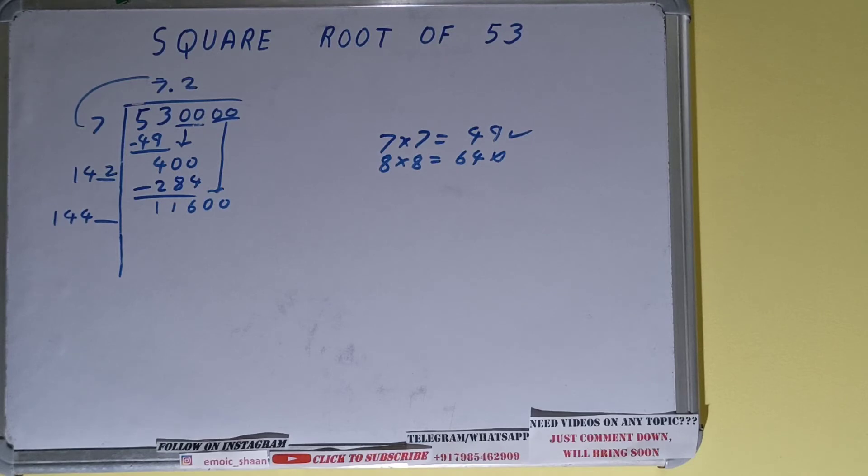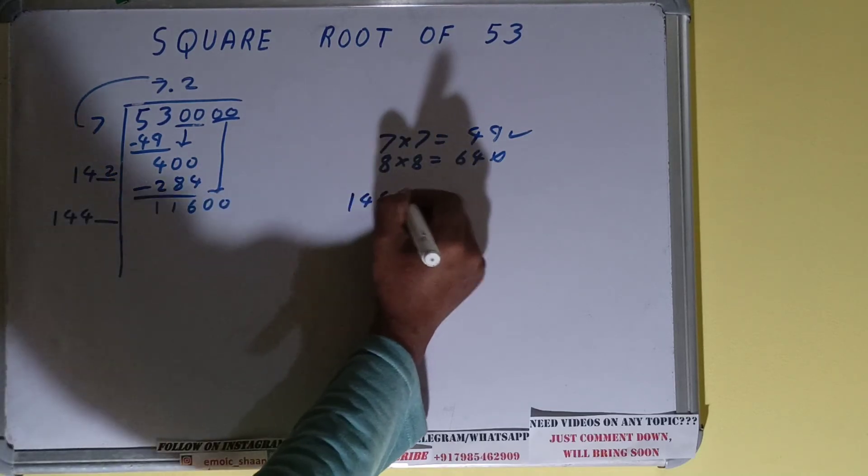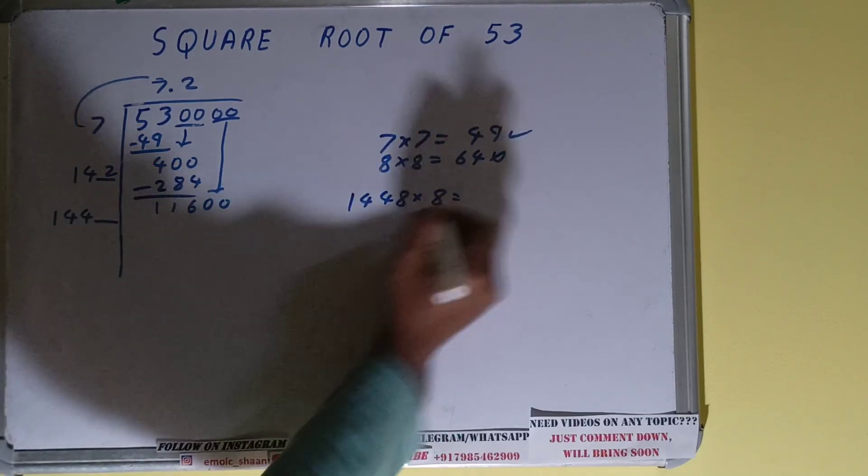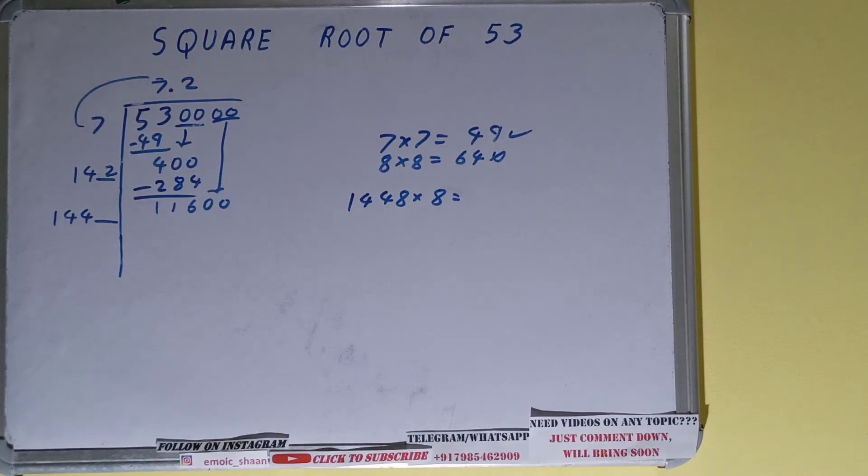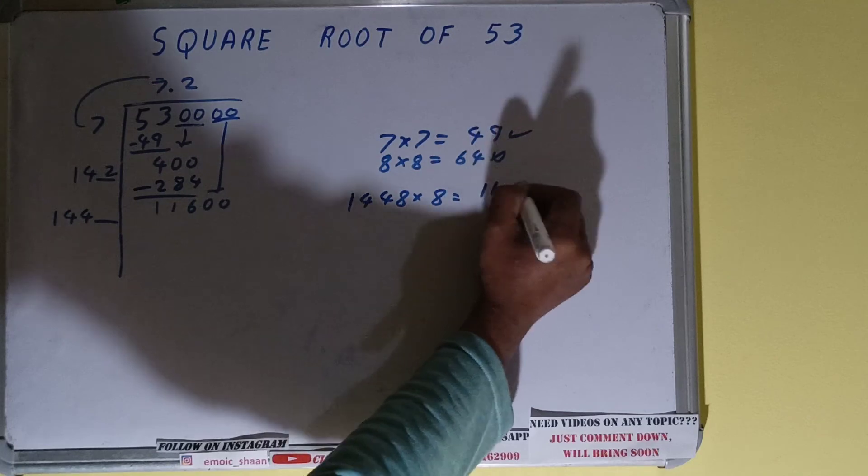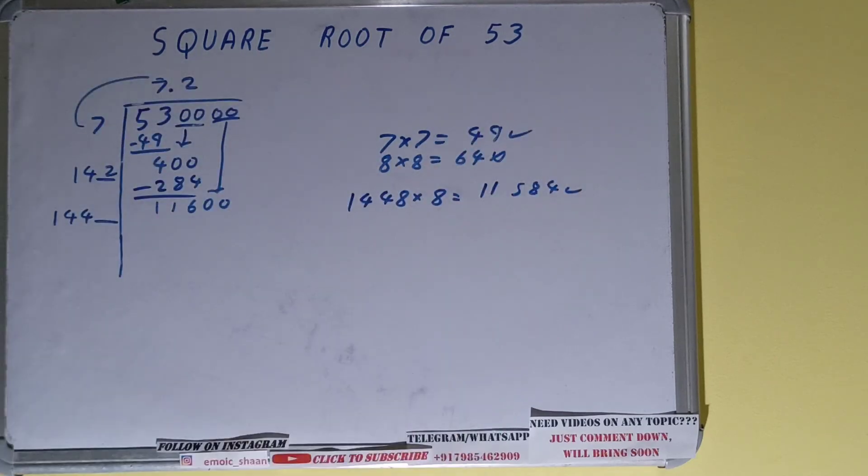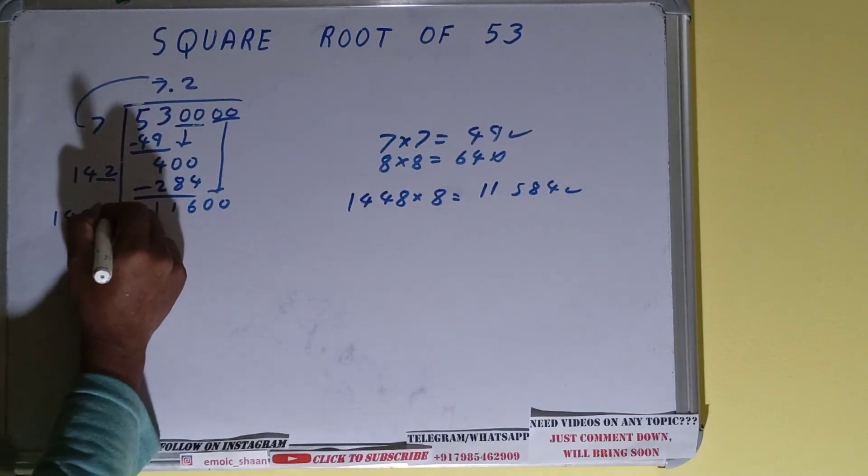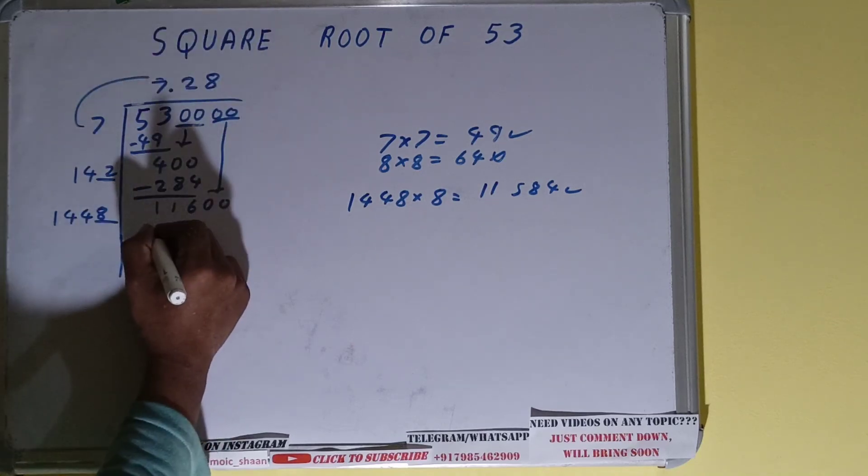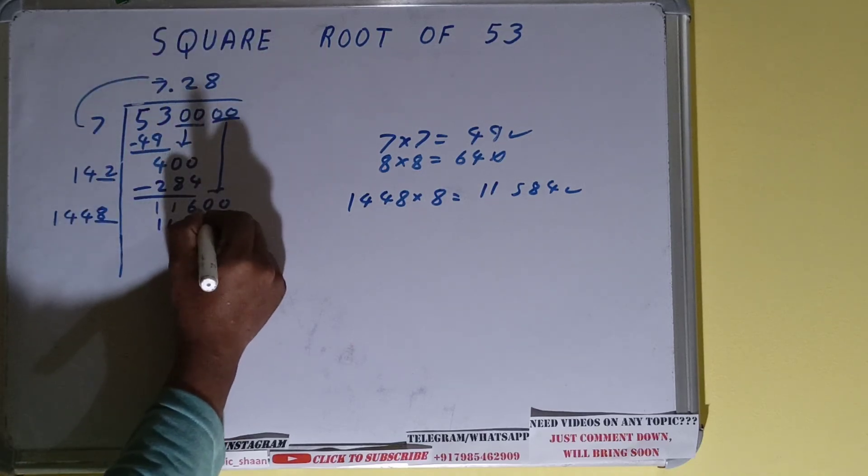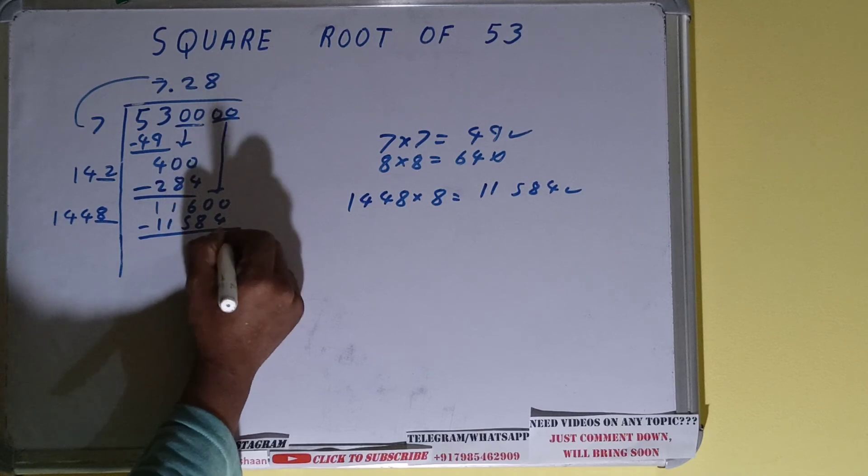So let's try with 8. 1448 into 8, it will be 11,584 and it will work. Okay, so we can take 8 here and 8 here. 11,584, left with 16.